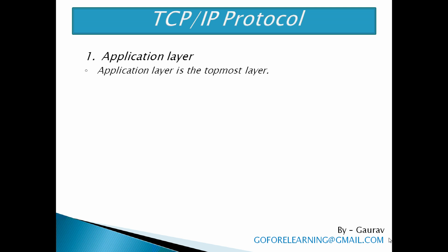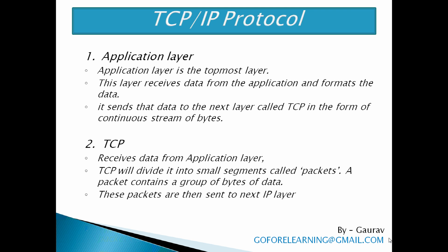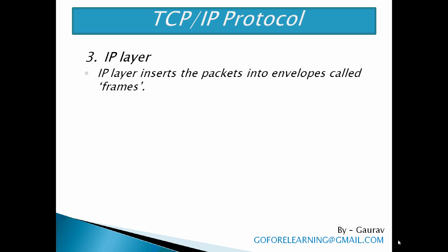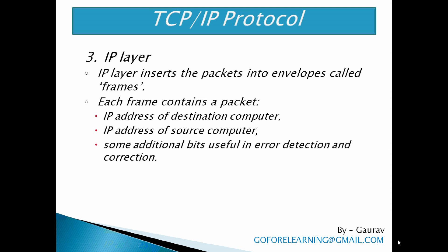Next is TCP. After receiving data from the Application layer, it will divide it into small segments called packets. A packet contains a group of bytes of data. These packets are then sent to the next IP layer. The IP layer inserts the packet into envelopes called frames. Each frame contains a packet, the IP address of the destination computer, the IP address of the source computer, and some additional bits useful in error detection and correction. These frames are then sent to the Data Link layer.